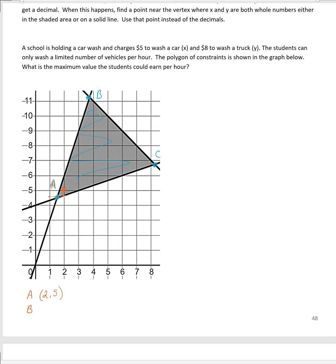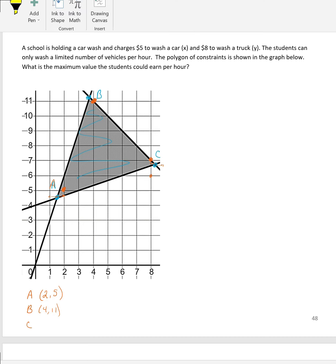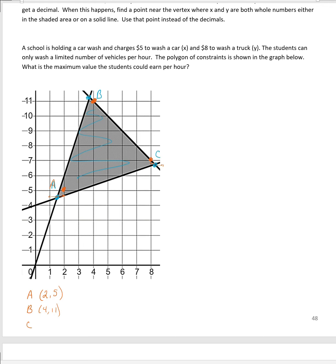Now we'll do the same thing with B. It's a decimal, so we need to move it to the closest integers. Looking for where things cross nicely, we move B to the new point where X is 4 and Y is 11. Then for C, moving up to X = 9 would be off the graph and outside the polygon, so we have to move it inside to X = 8. The point (8, 7) is really close, and (8, 6) would be outside the polygon, so C becomes (8, 7).